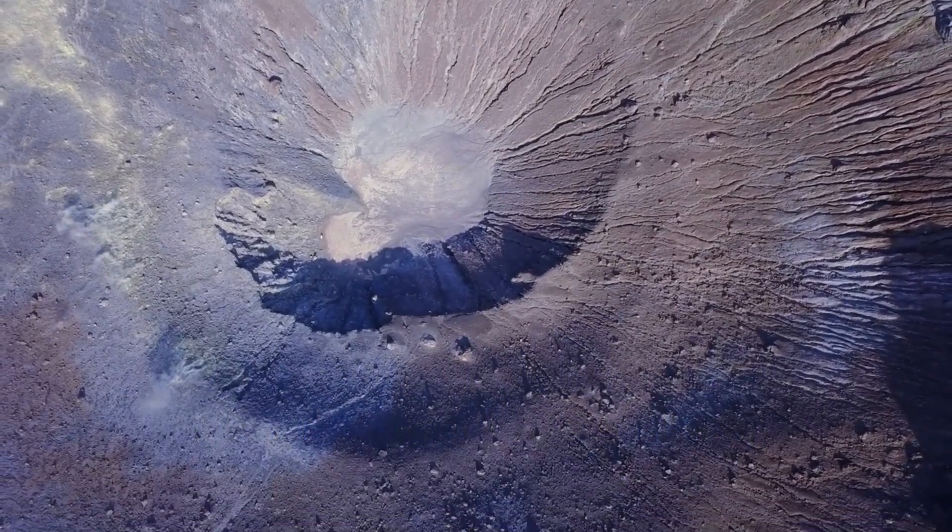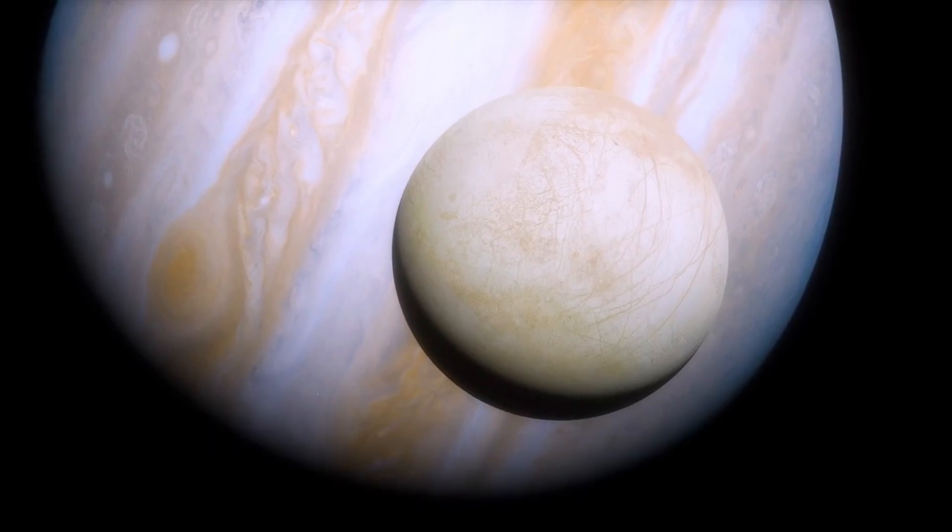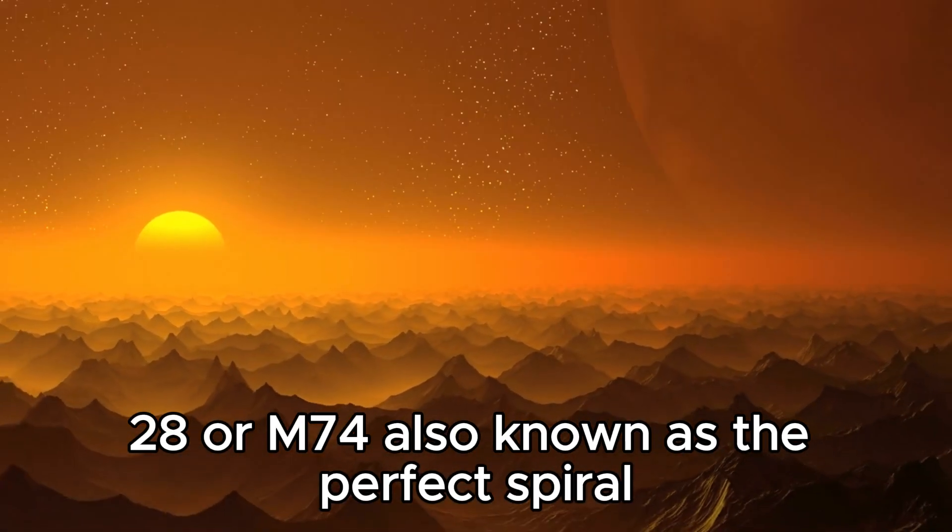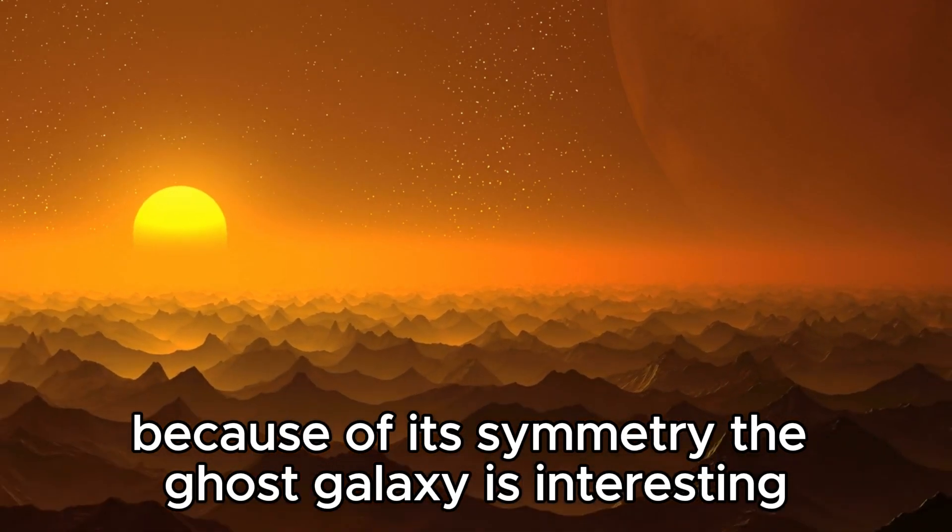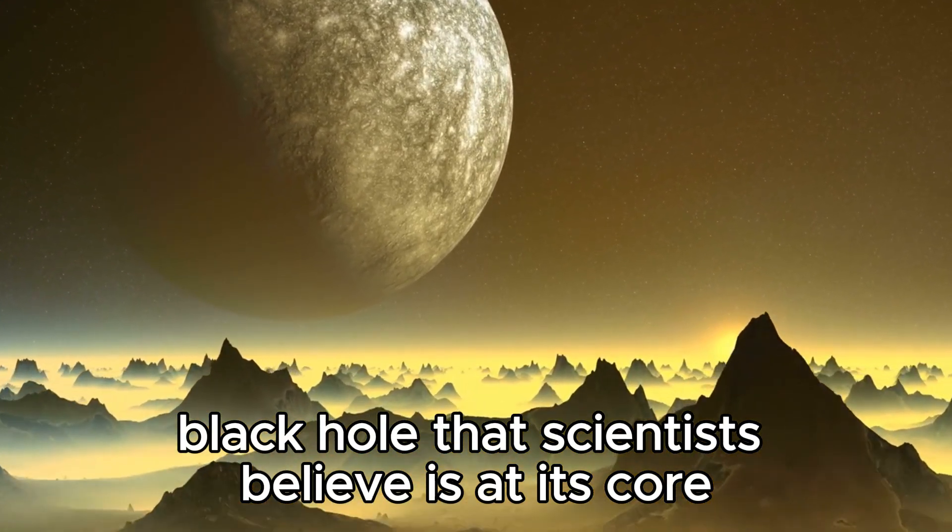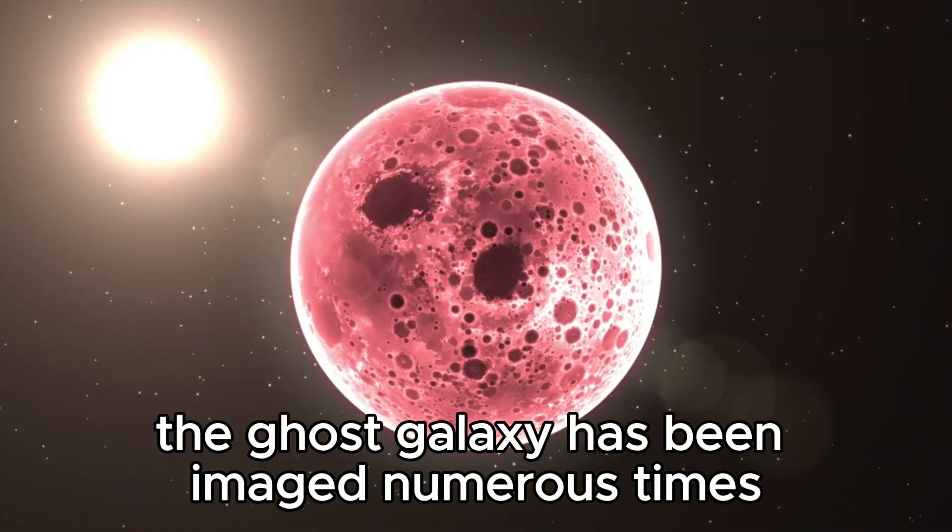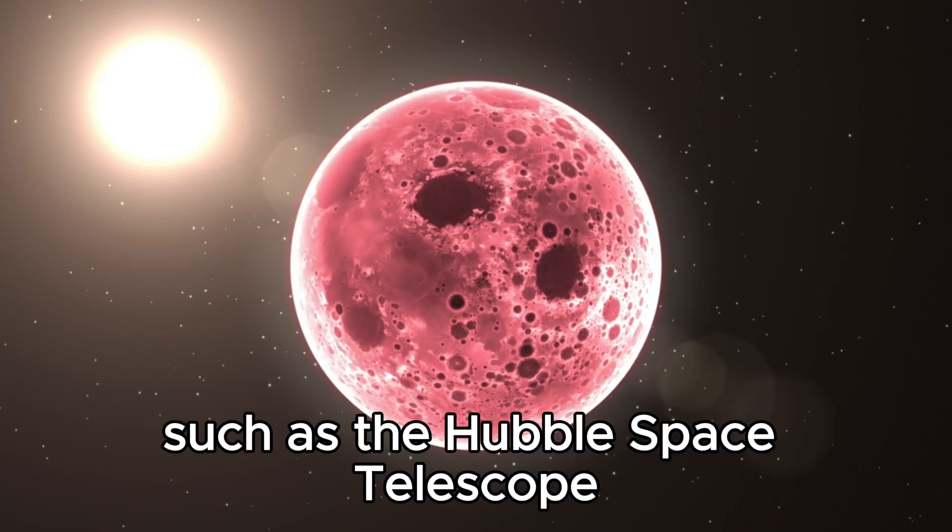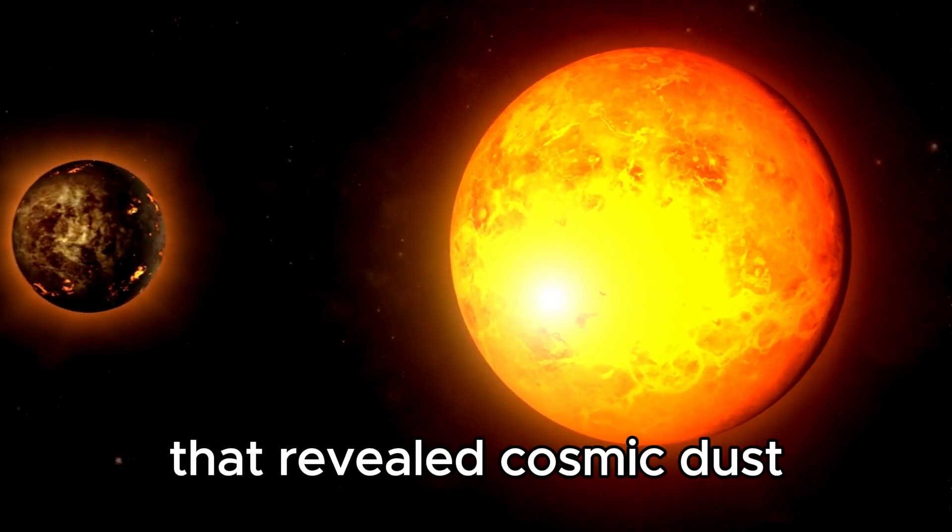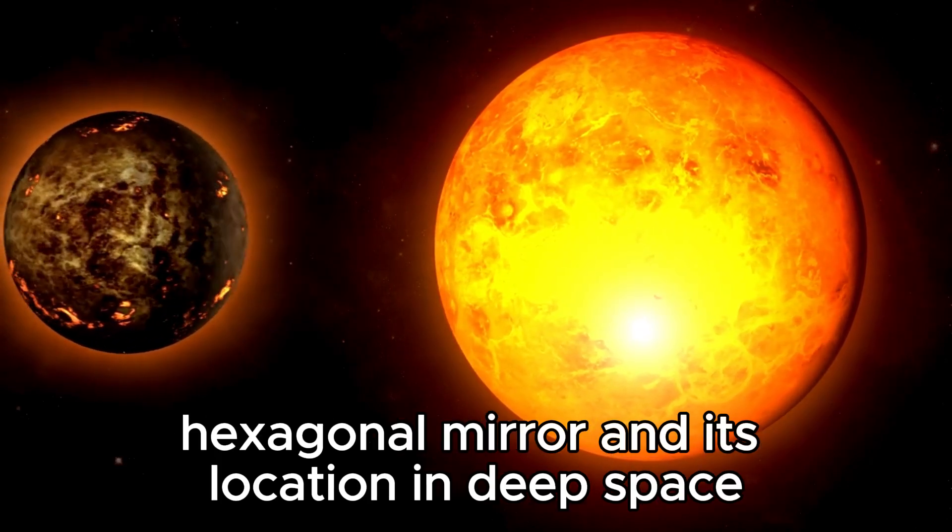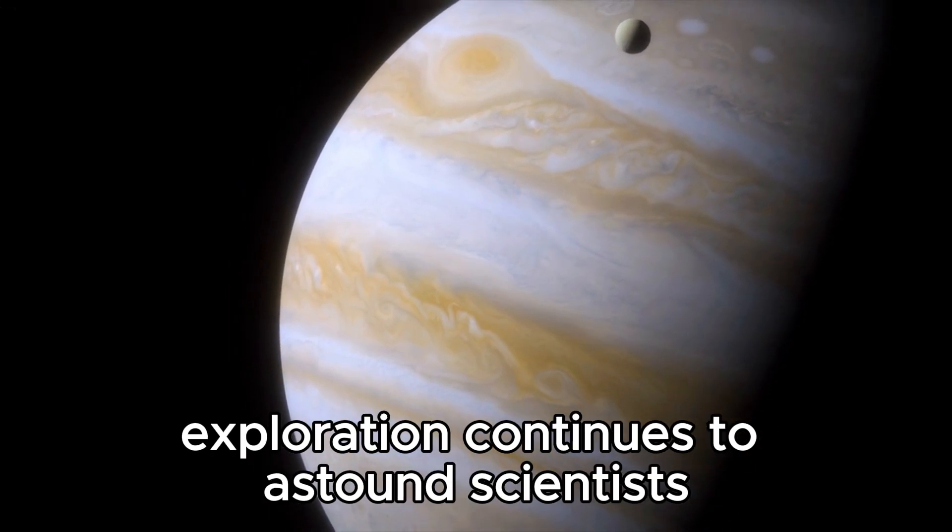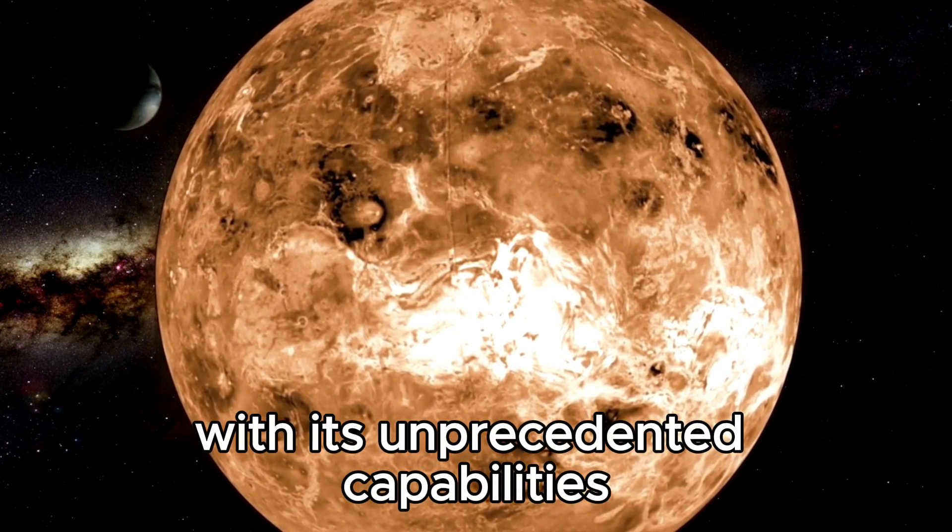Another amazing image captured by the James Webb Space Telescope shows the Ghost Galaxy, which looks like a whirlpool spinning before our eyes. This new image, based on deep space data, highlights the dust lanes of galaxy NGC 628 or M74, also known as the perfect spiral because of its symmetry. The Ghost Galaxy is interesting from a scientific point of view because of the intermediate mass black hole that scientists believe is at its core. Although the Ghost Galaxy has been imaged numerous times, the Webb images stand out because of the near-infrared French that revealed cosmic dust. Combined with the power of its unique 18-segment hexagonal mirror and its location in deep space, the James Webb Telescope continues to astound scientists with its unprecedented capabilities.